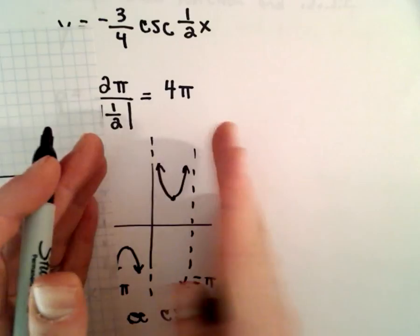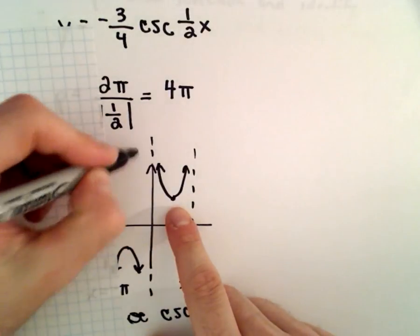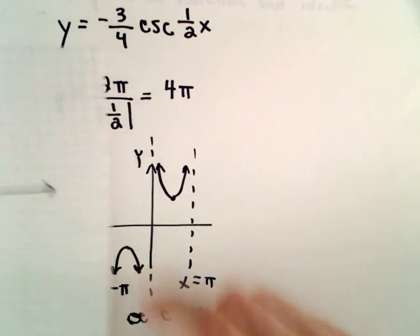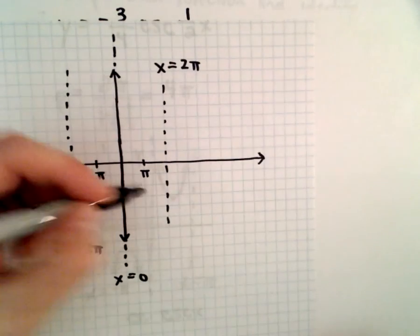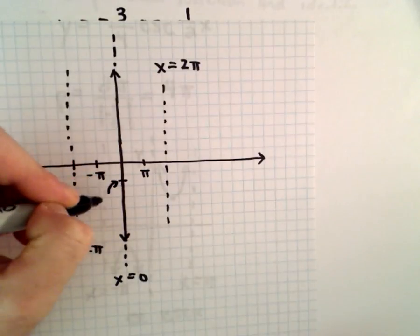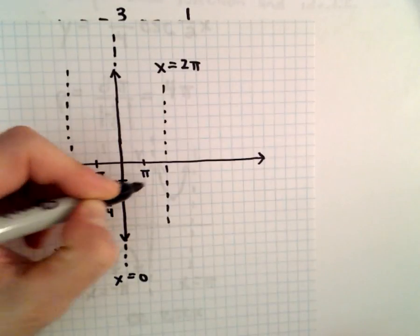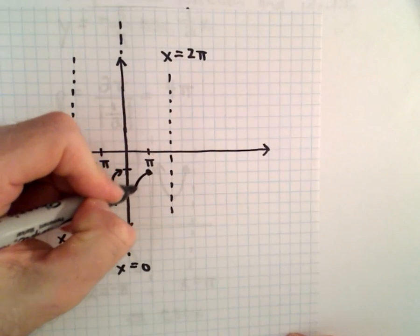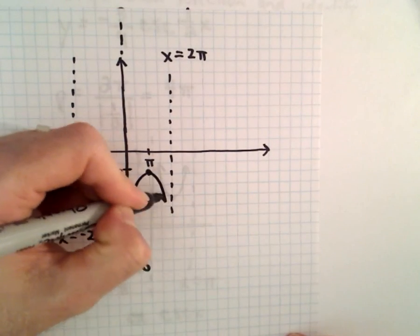So again, the portion to the right of the y-axis, the first part that you would graph normally is above the x-axis, but because of the negative three-fourths, it's going to get reflected down. So that'll be the y-coordinate of negative three-fourths. That'll be the value at pi. And then the graph will be decreasing.